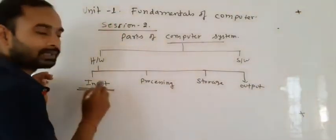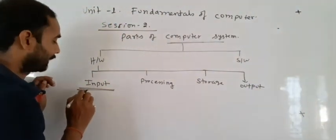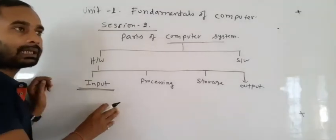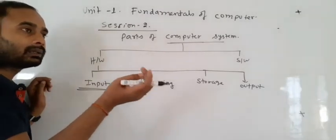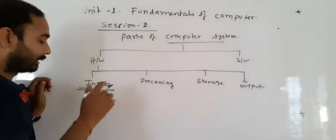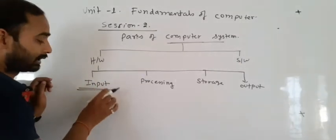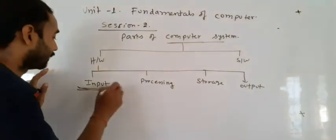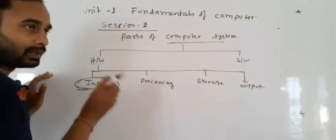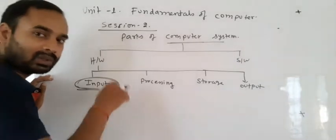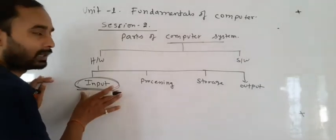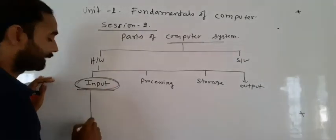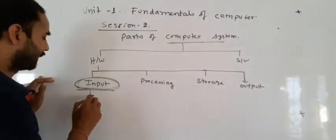As the name suggests, input means the data can be inserted with the help of keyboard, mouse, or scanner. Those devices which are used to insert the data into the computer system are known as input devices, and there are various types of examples.